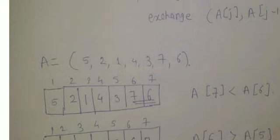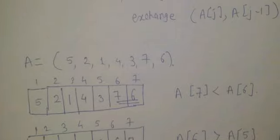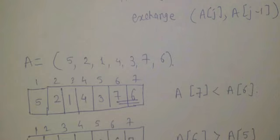Now we will discuss how we can solve the problem using bubble sort. Here an array is given: a = [5, 2, 1, 4, 3, 7, 6]. In bubble sort, remember you have to check the values from the last element to the first element. First check the last 2 elements, then decrement the counter by 1. For example if there are 5 numbers, check 5th and 4th, then 4th and 3rd, then 3rd and 2nd, then 2nd and 1st. In this way you sort the elements.